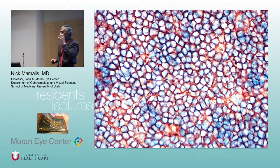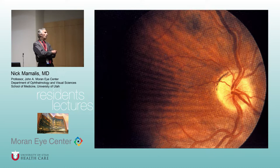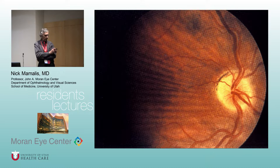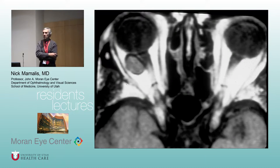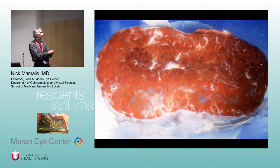Here we see choroidal folds. The most common cause is hyperopia with a flat posterior eye, but when looking for orbital lesions, choroidal folds suggest an intraconal lesion compressing the optic nerve. This patient is 25 with vague symptoms of fullness and pain around the eye. The CT shows a lesion in the intraconal area of the orbit — not on the nerve but adjacent to it.